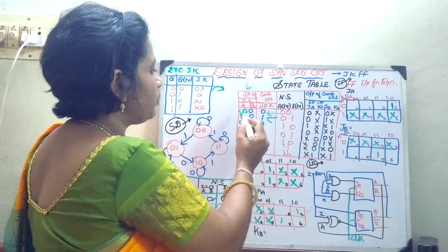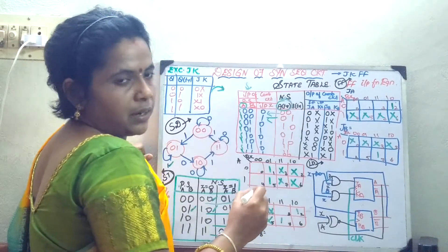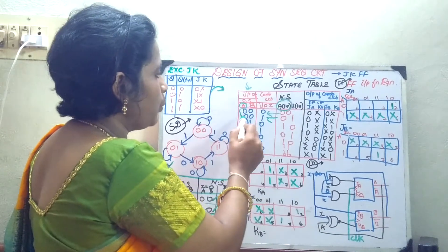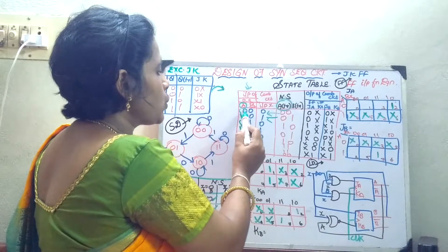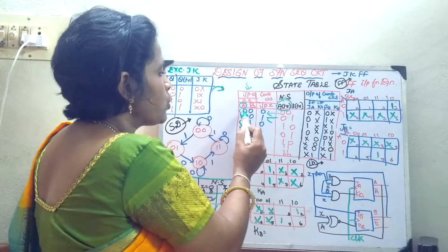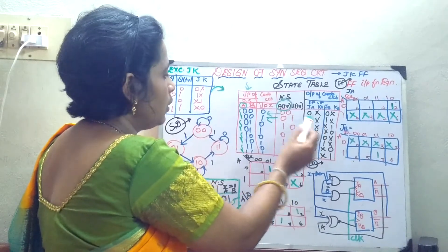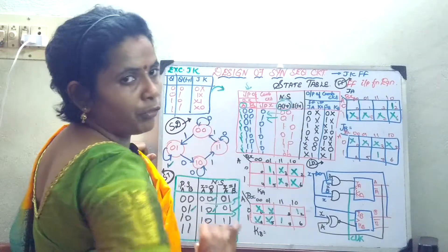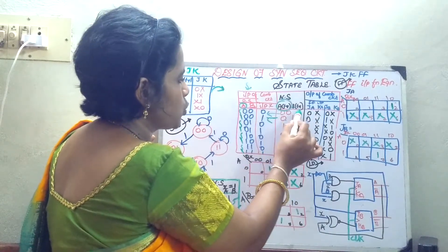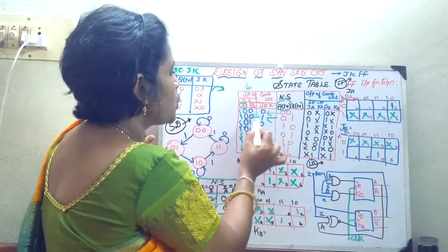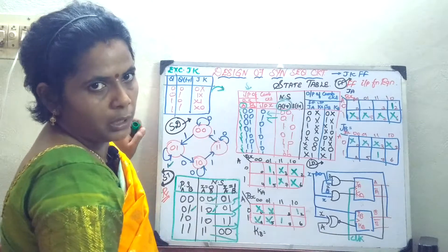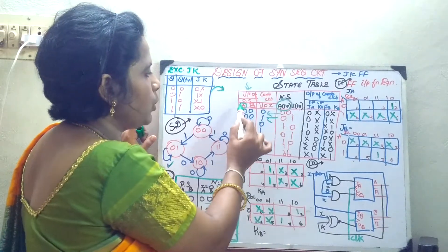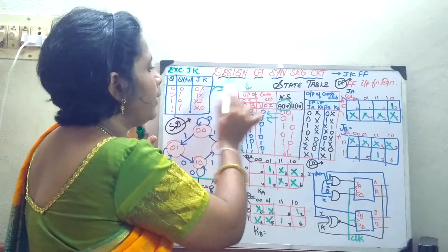Here you consider the present state and the next state. When the input transition is 0→0, the JK input is 0x. When 0→1, it is 1x. You write the input for JA, KA considering A and A(t+1), and for JB, KB considering B and B(t+1). So when B goes 0→0, it is 0x; when 0→1, it is 1x. In this fashion you frame the table. From the state diagram you draw your state table; from the state table you write the extended state table; then comparing A and A(t+1), B and B(t+1), you write your excitation values.